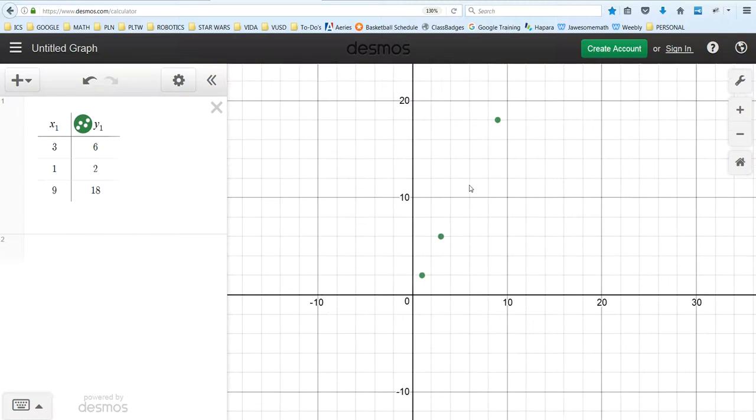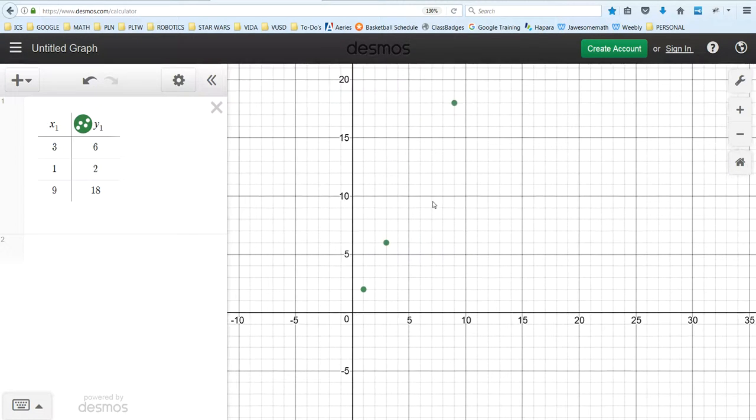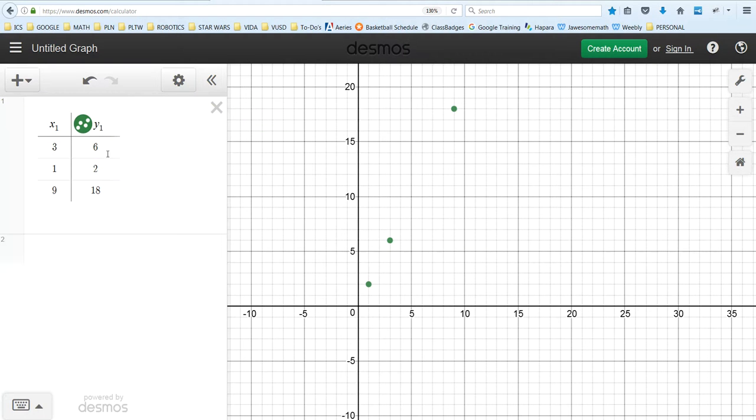My points are in green, and so I've got the point three six right here, I've got the point one two, and I've got the point nine eighteen.